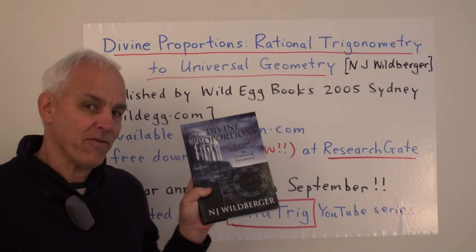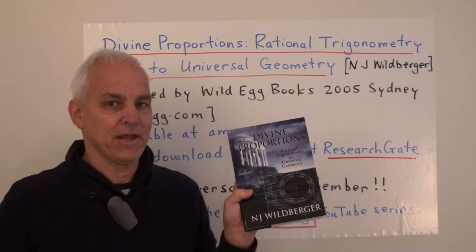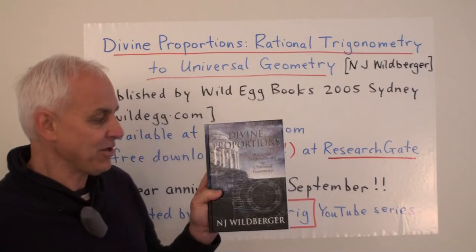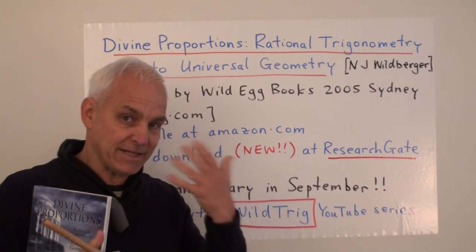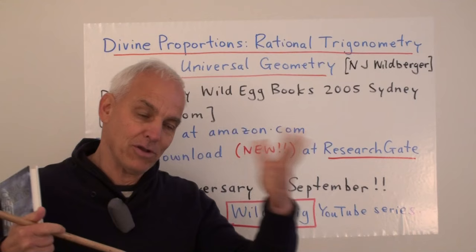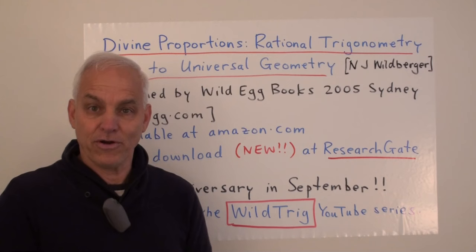I think it's a very novel book in many ways because, first of all, it lays out a new theory of trigonometry — the standard subject that high school students and university students study — in a completely rational form. So circumventing the usual sines, cosines, and tangents, replacing everything with purely rational insights, and extending the subject in lots of new directions, in particular to finite fields and to other metrical geometries.